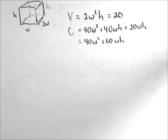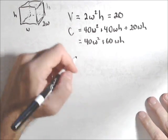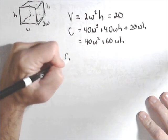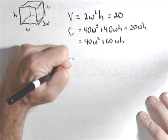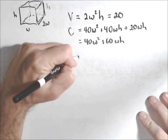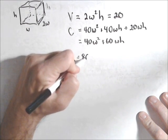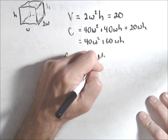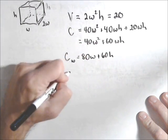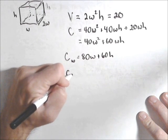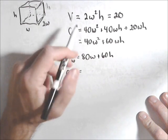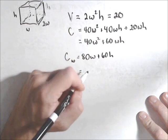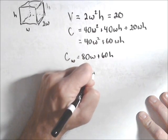Okay, so we're going to solve this using Lagrange multipliers, which means we need our partials of both our objective function. So C sub W equals 80W plus 60H, and C sub H, now we take the partial with respect to H, that's the only term with an H in it, it's 60W.